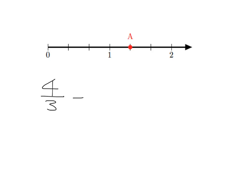You should remember from last year — that's an improper fraction. And we can always turn an improper fraction into a mixed number. We say three divides into four — it goes one time with one remaining — so we've got one and one-third. And we can see how that makes sense on the number line: there's the one, and there's the one-third. So four-thirds is the same as one and one-third.